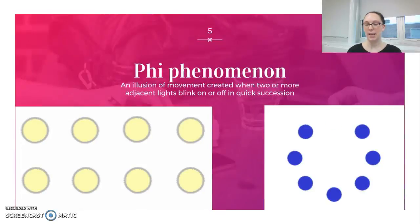Another kind of interesting thing is something called the phi phenomenon, where we actually perceive motion. It's an illusion, but we perceive motion or movement when adjacent lights blink on or off in quick succession.